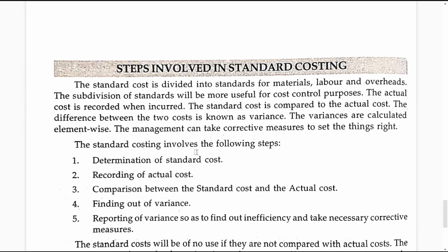For example, if the concern has decided to spend 1000 rupees to offer a particular service, the 1000 rupees is the standard cost. After determining the standard cost of 1000 rupees for a given activity, the activity is actually carried out, and the actual cost of offering the activity is measured. If the actual cost is exactly 1000 rupees, the actual performance is on par with the standard.